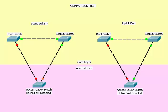If the link between the root switch and the access layer switch comes up again, it will take about 35 seconds before it becomes the primary link again. It took about 30 seconds for the switches configured with standard spanning tree to converge, but the switches with Uplink Fast took less than a second.